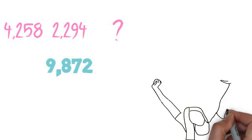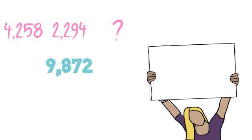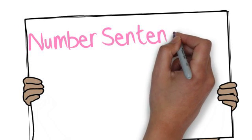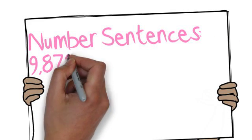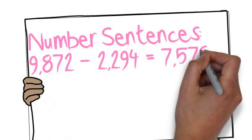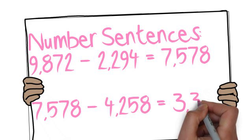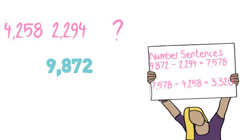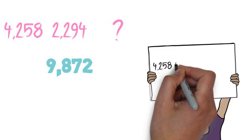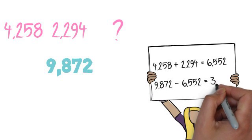From this picture, you can do one of two things. You can take the total, which is 9,872, and take away each part separately — so 9,872 minus 2,294, and then when you get that answer, you can also take away 4,258. Another way is to add all of your parts together and subtract them from your total all at once.